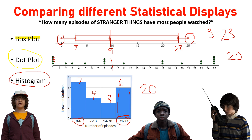But one thing they did not do well: if you look back at the question — how many episodes of Stranger Things have most people watched? — all they asked was twenty different people at their local middle school. Let's see some different ways to make this better data.